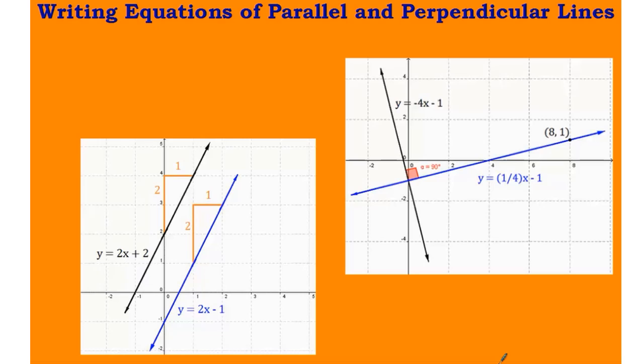Today we will look into writing equations of parallel and perpendicular lines. We have been writing equations in slope-intercept form and point-slope form. In each style, all we need to do is identify the slope and use one point to write the equation. Today, with equations of parallel and perpendicular lines, we will be finding the slope from the parallel and perpendicular information.